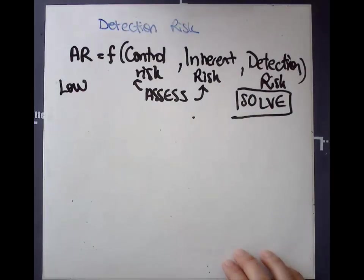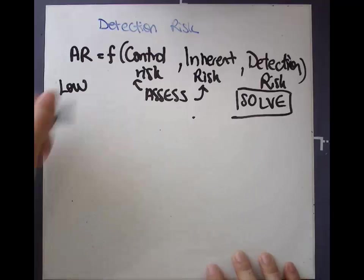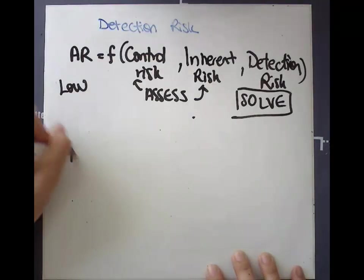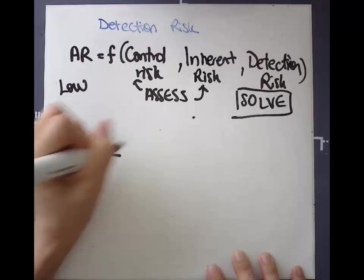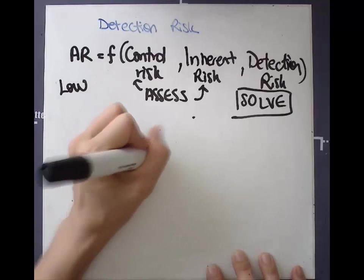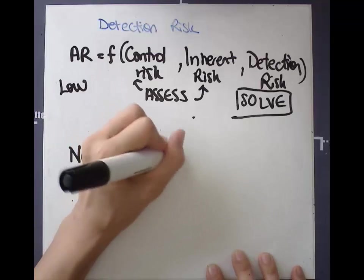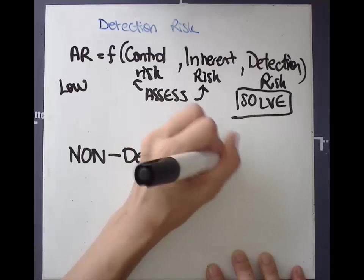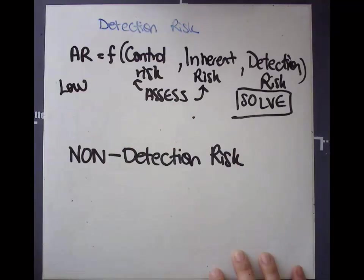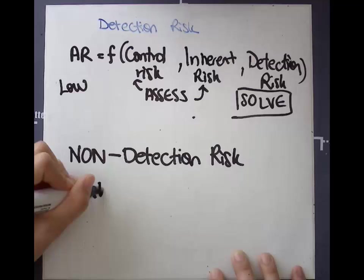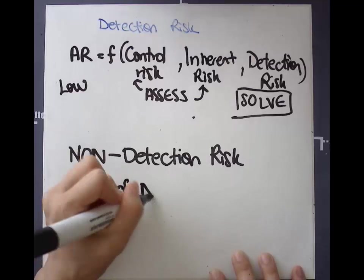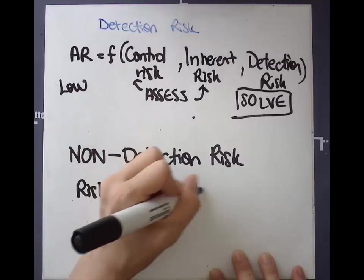People often get confused about what detection risk does and does not represent. And a good way to think about it is that detection risk is actually, or really should be called, non-detection risk because it's really the risk of not detecting a material misstatement.